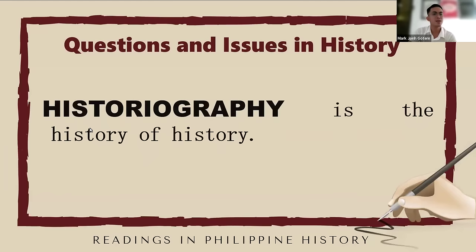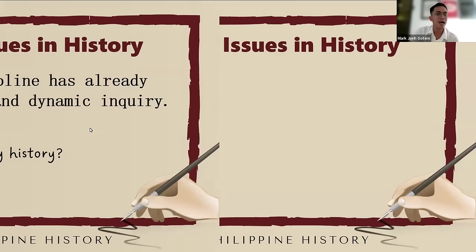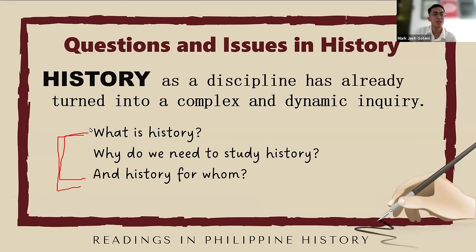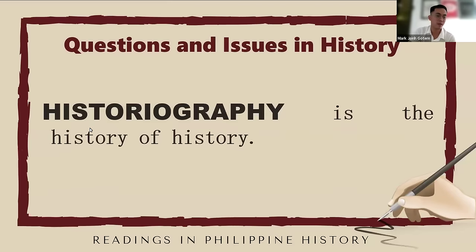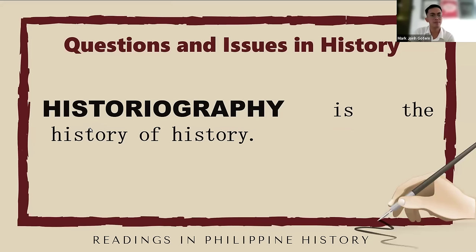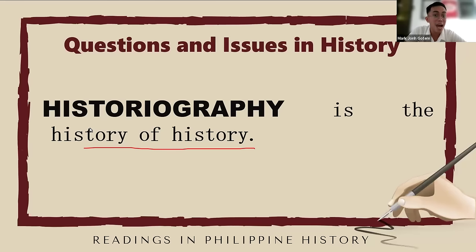Next is historiography. History as a discipline has grown into a complex and dynamic inquiry. To answer those three questions, there is a term called historiography. Historiography, in the simplest term, is the study of history itself — it is the history of history. Historiography is the study of how history has been written, recorded, and interpreted over time.